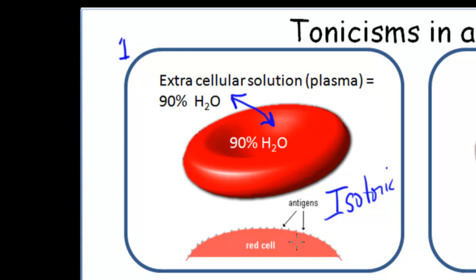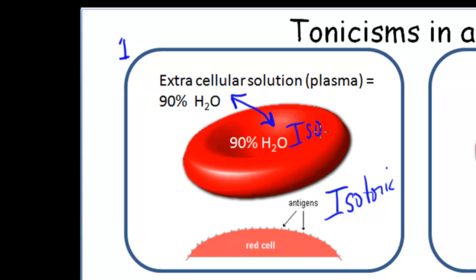I also want to mention antigens for a second, because we do have different blood types. These antigens correspond to A, B, O, and AB blood. If you actually get the wrong type of blood donation when you lose blood, your body will fight that blood cell and may even kill it, which could be really bad for you. So it's iso on both sides — isotonic means the water is moving in both directions.